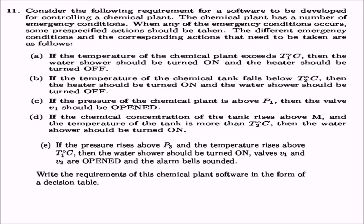Consider the following requirement for software controlling a chemical plant. The plant has a number of emergency conditions with pre-specified actions: if temperature exceeds a degree, the water power should be turned on and the heater turned off; if temperature falls below a degree, the heater should be turned on and water turned off; if pressure is above V1, valve V1 should be opened; if chemical concentration rises above M and temperature is above T3, the water shower should be turned on; if pressure rises above P3 and temperature above T1, the water shower turns on while V1 and V2 are open and alarm bells sound.